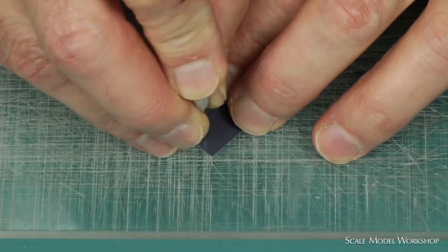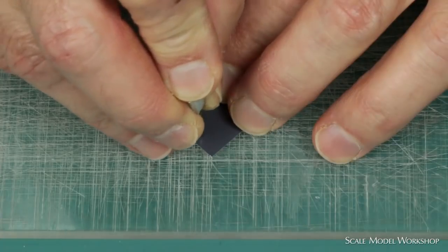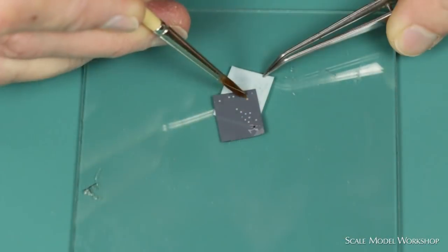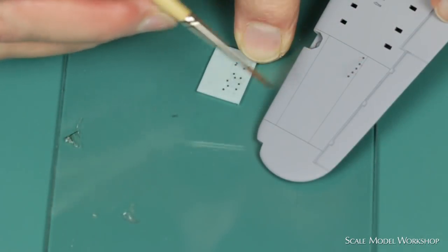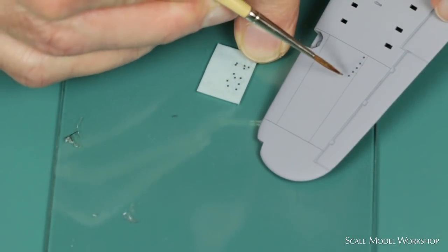A syringe is used as a punch. Once wet, the dots are harvested. The dots can then be easily placed into position.